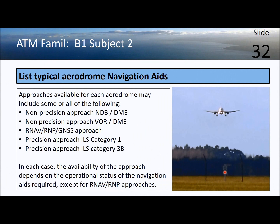Typical aerodrome navigation aids include non-precision approaches using NDB DME or VOR DME, and RNAV RNP approaches which use GPS. In each case, the availability of the navigation aids is important unless it's an RNAV RNP approach.